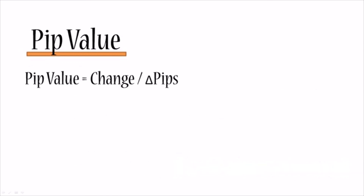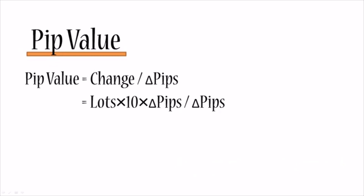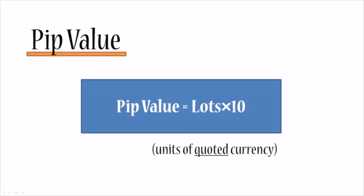To calculate pip value, we take the change and divide by the number of pips moved. Plugging in the previous result: (lots × 10 × Δpips) ÷ Δpips. The Δpips cancel, giving us the final formula: pip value = lots × 10, measured in units of quoted currency. This is a very important formula to remember, and we'll talk about it further in the next tutorial.